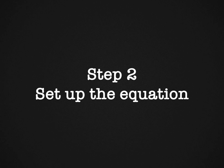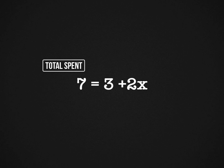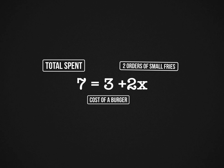Step two is to set up the equation. My equation is going to be: 7 is equal to 3 plus 2X. The 7 represents the total amount of money that Sam spent. 3 represents the cost of a burger. 2X represents the two orders of small fries — if each order is worth one X, two orders are worth two X's. So the equation is 7 = 3 + 2X.